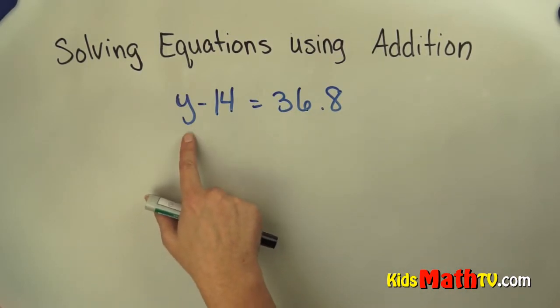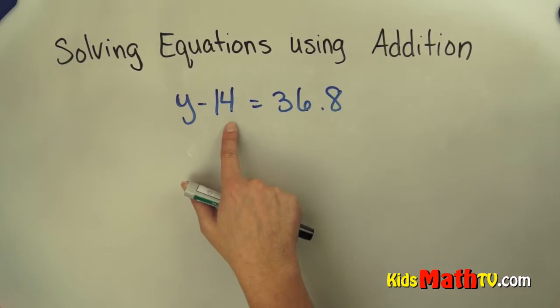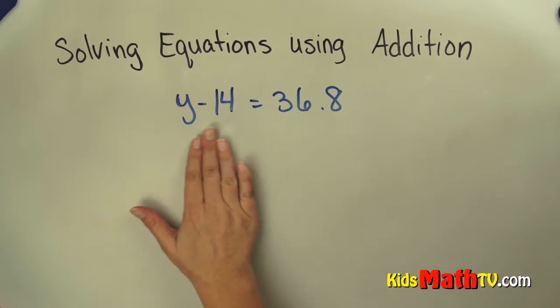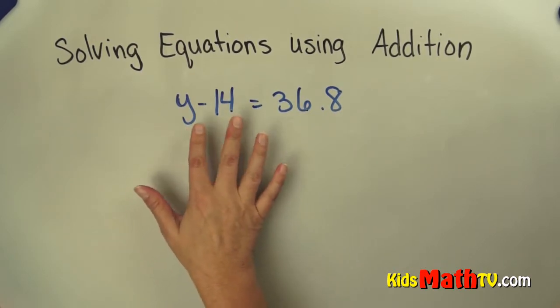I see that my variable y is with subtract 14. So to isolate this variable I want to use the inverse operation. The inverse of subtracting 14 is adding 14. So if I want to get this y by itself I can add 14 to this side and I will get 0.